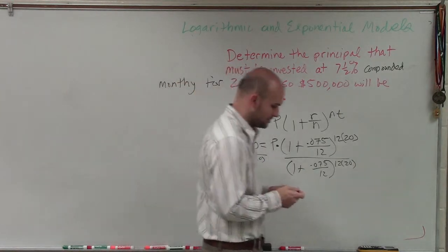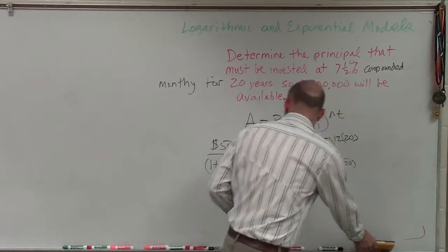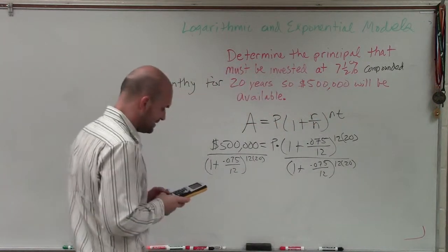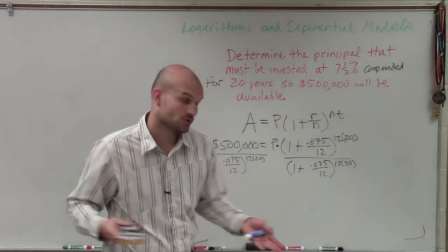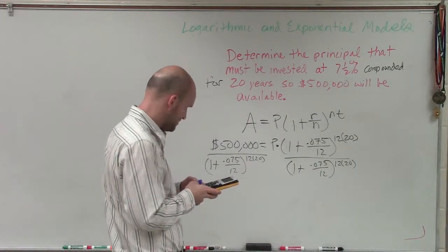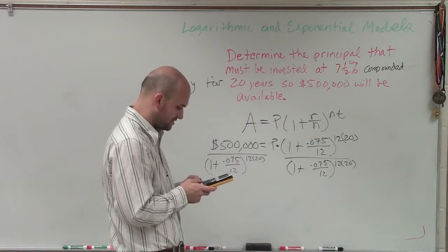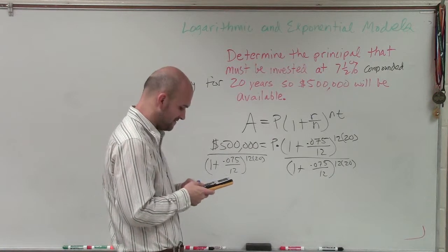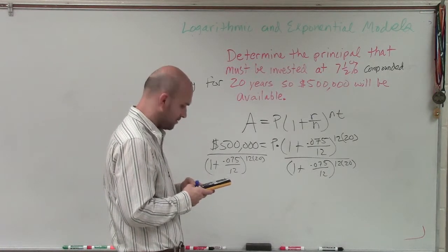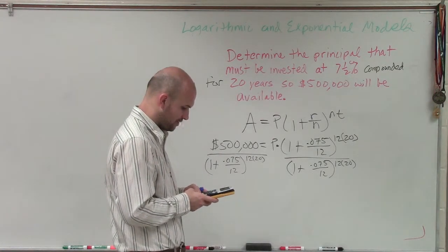OK, so to do that, now I need you to compute what this is going to be. So 12 times 20 is going to be 240, then I do 0.075 divided by 12, plus 1, raised to 240.